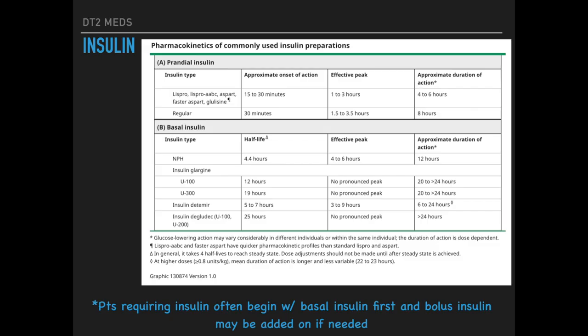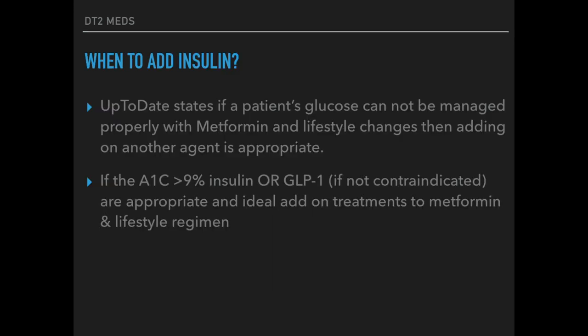The last drug class is insulin. I included a graph from UpToDate covering onset of action, peak, and duration. I recommend being familiar with these, though you don't need to kill yourself remembering them for boards. If patients require insulin, we typically begin with basal insulin first — it's easier to manage and more tolerable — and then if needed, add on bolus insulin. UpToDate recommends adding insulin if the A1C is greater than 9%, or a GLP-1 if insulin is not indicated, as appropriate add-on treatment to metformin along with lifestyle modifications.